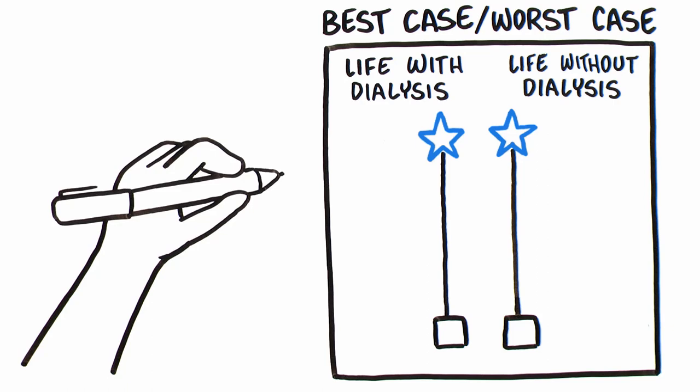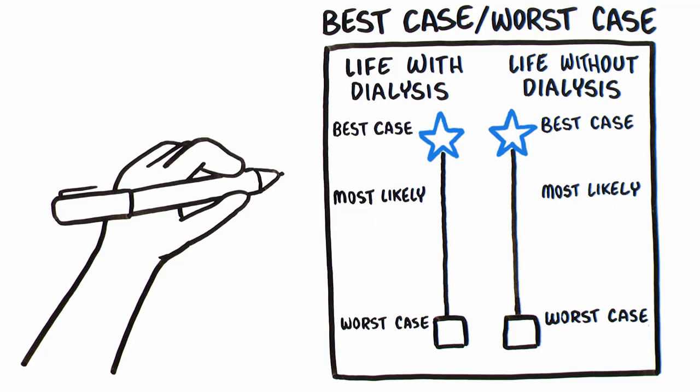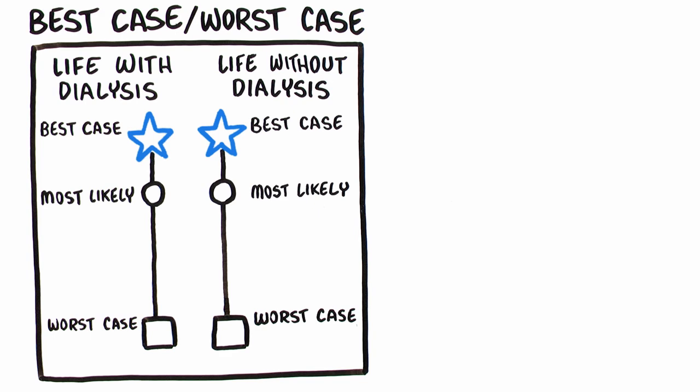The star represents a story about the best case. The box represents the worst case. Somewhere along the line lies most likely. Most likely may be close to, or the same as, the best or worst case, or it could lie somewhere in between. The idea is to combine what you know about the patient's overall health with your understanding of their kidney disease, giving patients and families your best estimate of what's likely to happen.